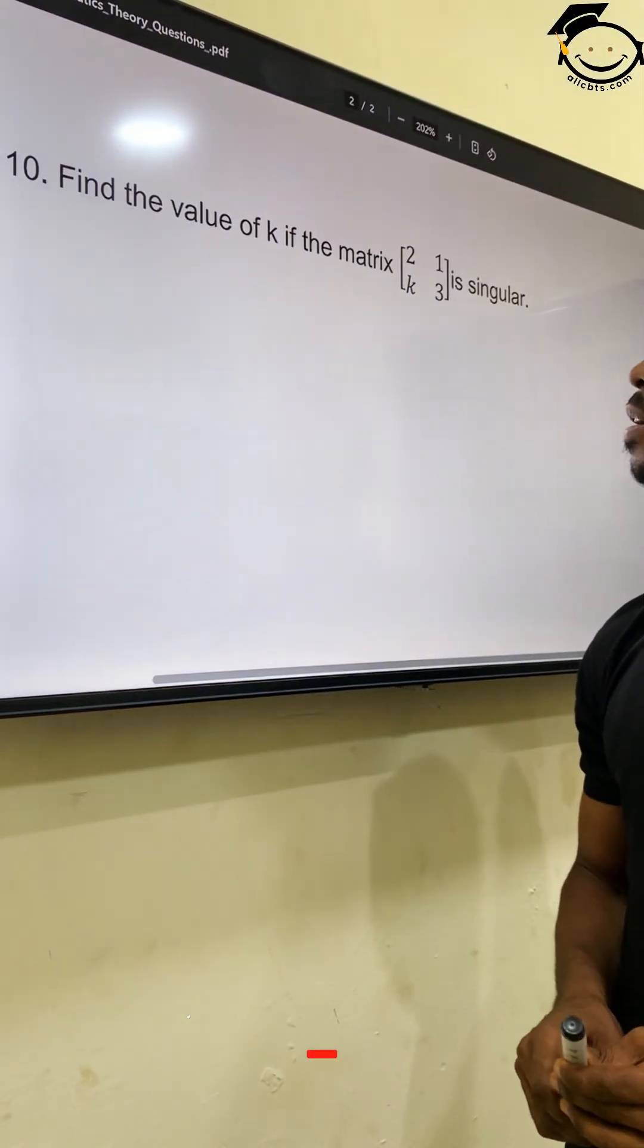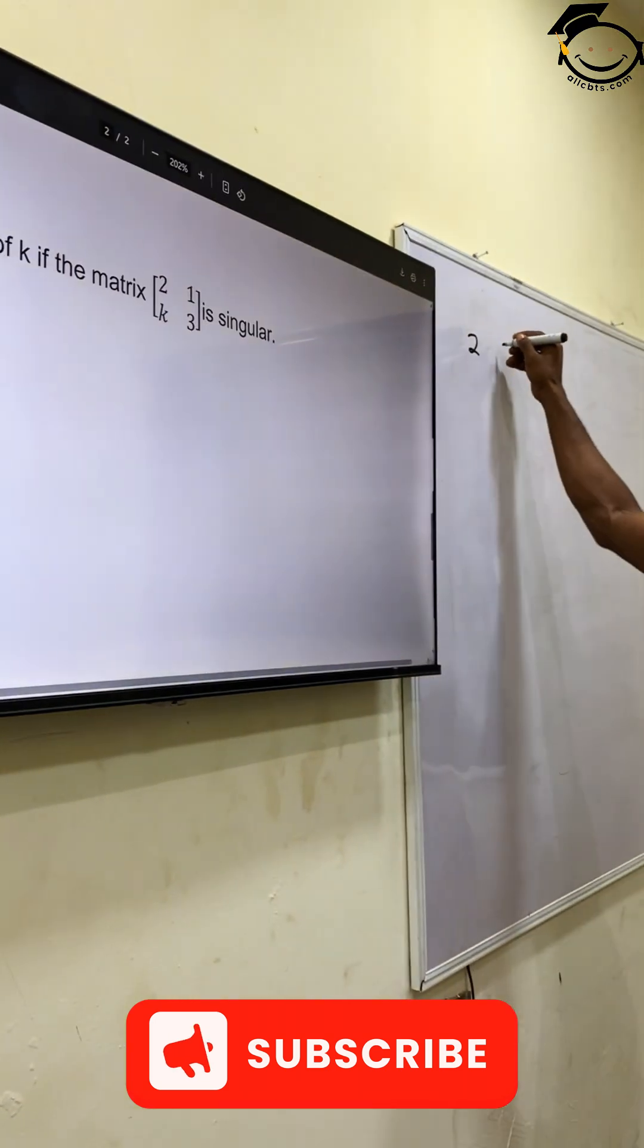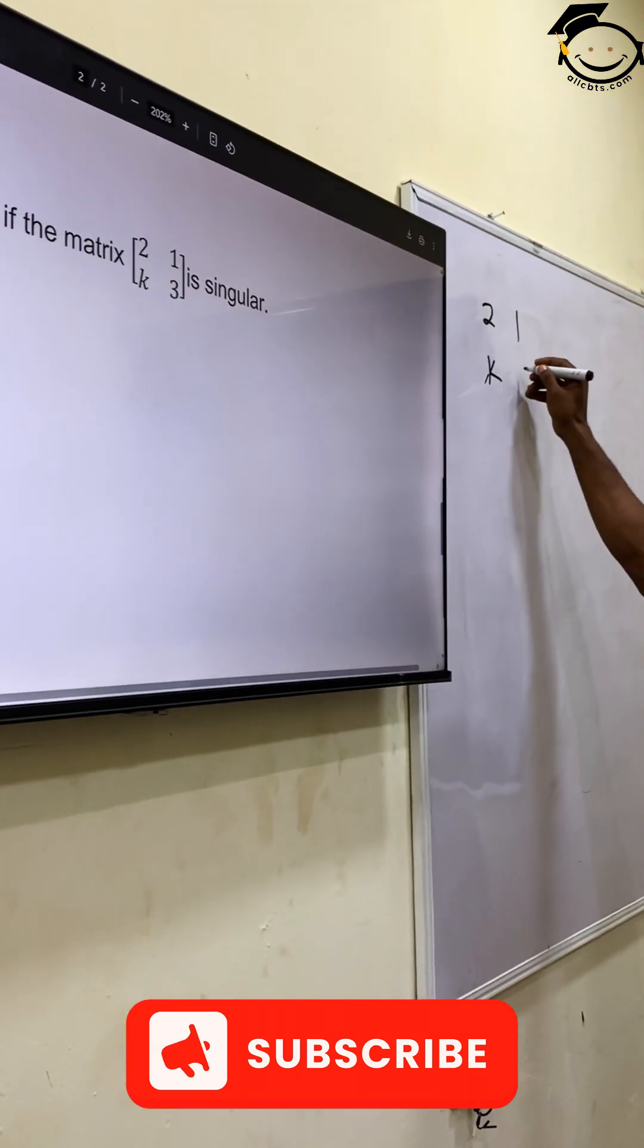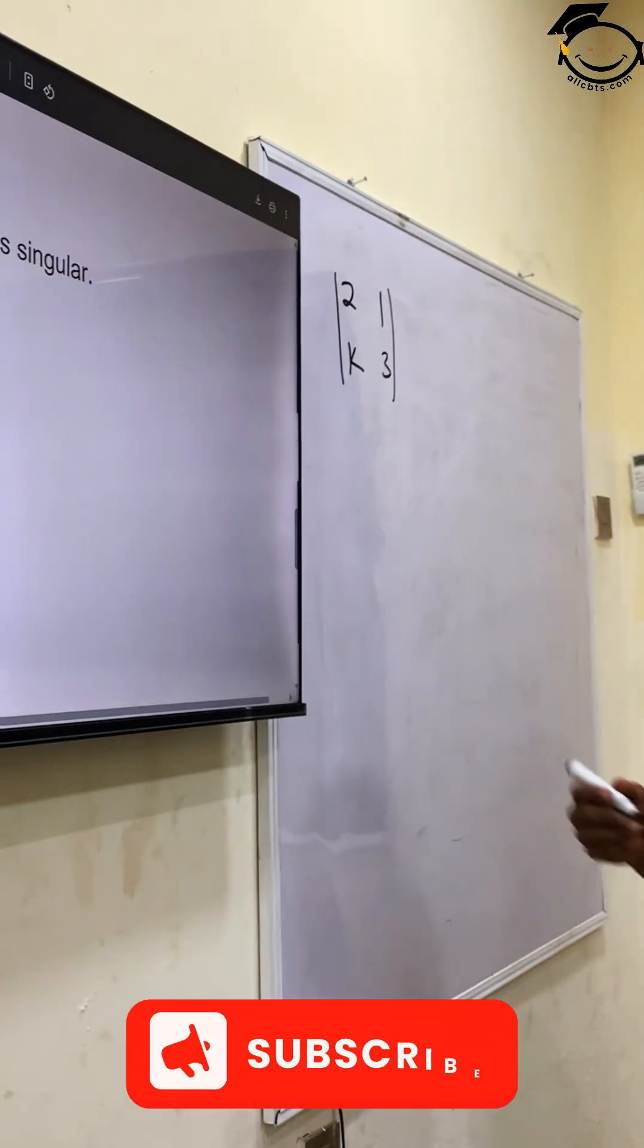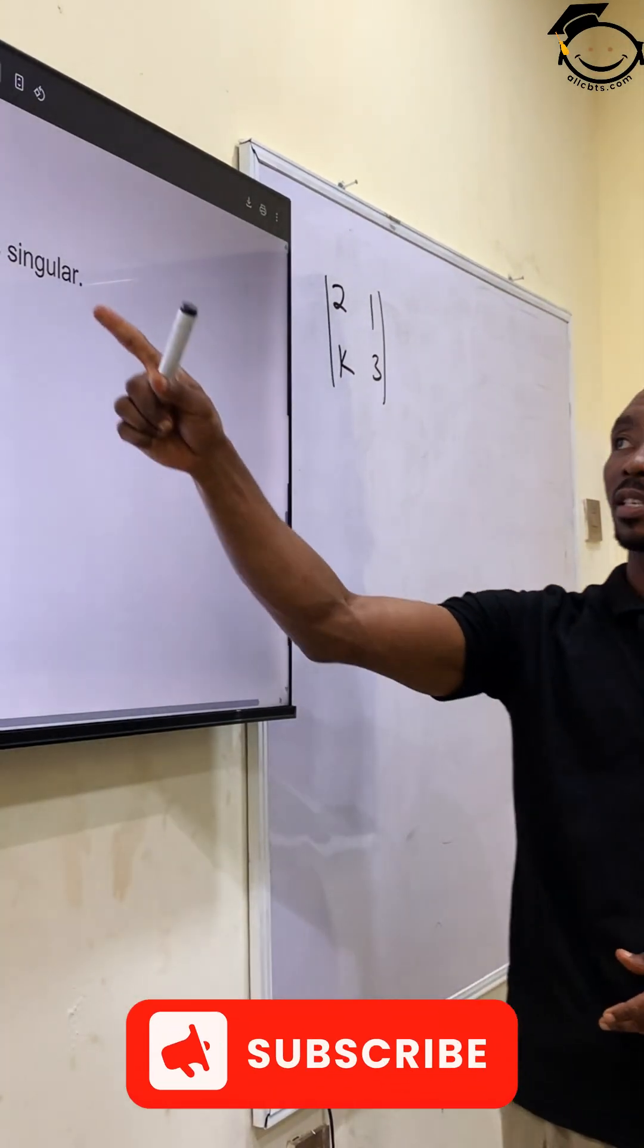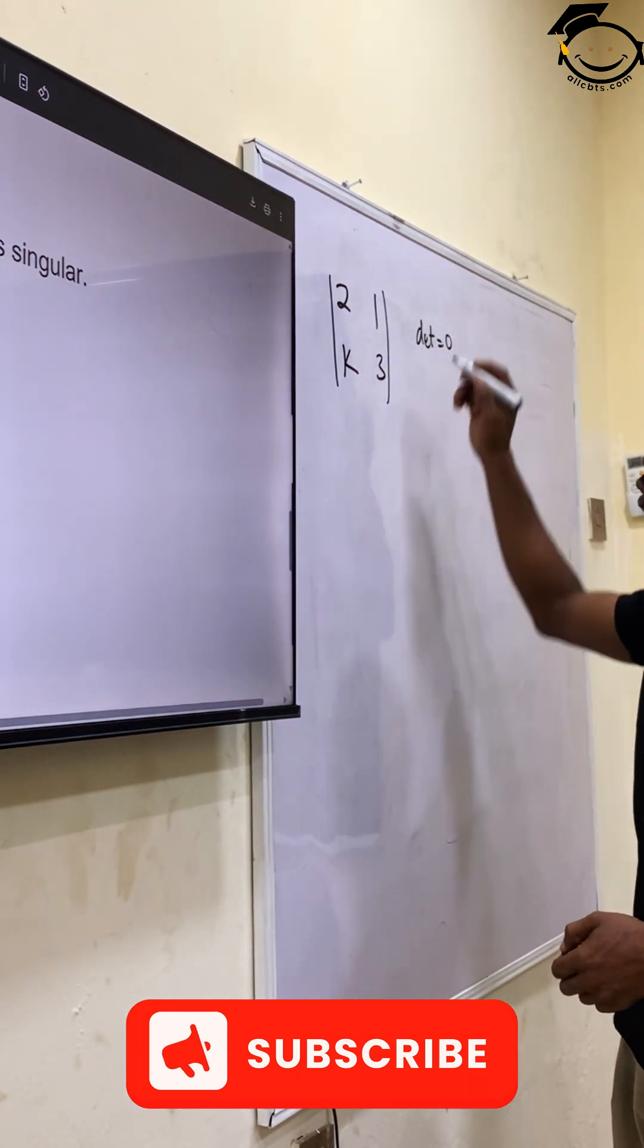Find the value of k if the matrix [2, 1; k, 3] is singular. Now in solving for k, since they've already told us that it's singular, we should know that our determinant for the matrix will be equal to